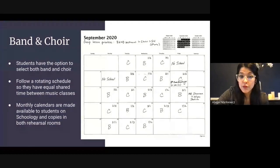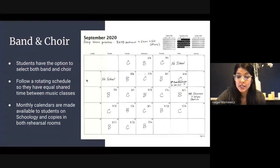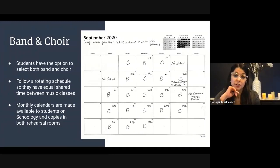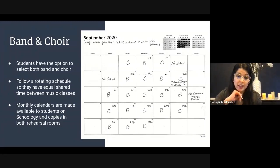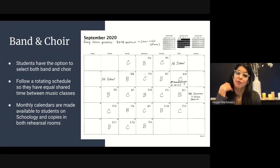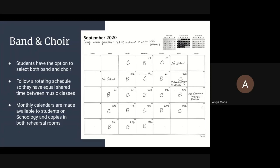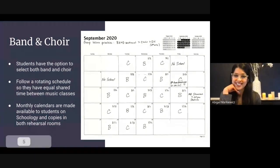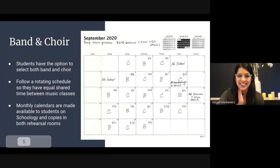The letters on the calendar — B would be for band and C would be for choir. So for the first week of September, if you're a choir student you would have choir, and if you're a shared band and choir student, you would have band on Wednesday.